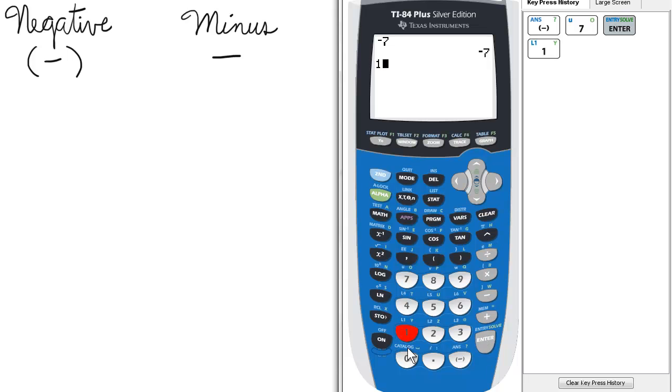So if we have 10 minus 7, we enter it thus on the keypad. Now we can go to more complicated operations such as 5 plus negative 3.